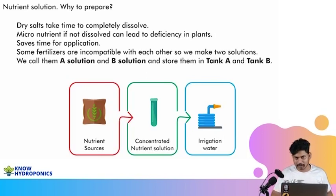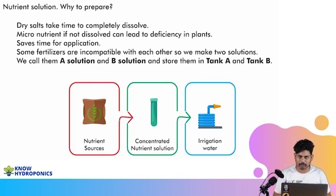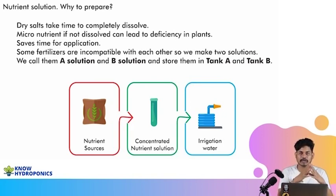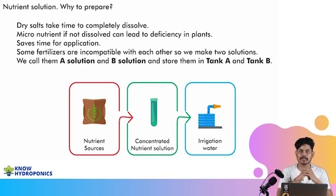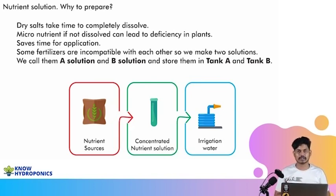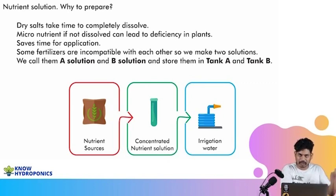Now let's talk about what a nutrient solution is, why to prepare it, and how to use it. Whenever you've tried learning about the hydroponic nutrient solution, you would have seen there are two types: Tank A and Tank B. A lot of people are confused about what Tank A and Tank B are and how they connect to the hydroponic system. Whenever we buy fertilizers from the local market or online, we get them in a dry salt or dry granular format.